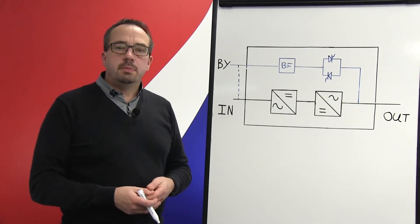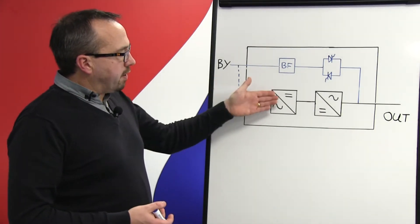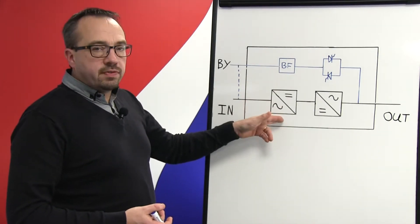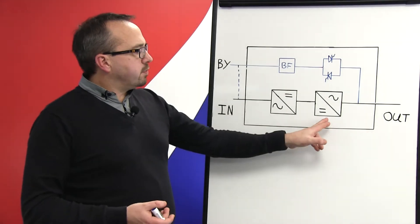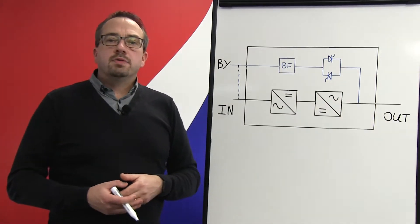The online dual conversion UPS system operates simply by taking the power from the main supply, converting that power from AC to DC via the rectifier. Then we re-invert that power from DC back to AC again via the inverter in order to supply power to our critical load.